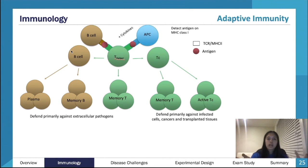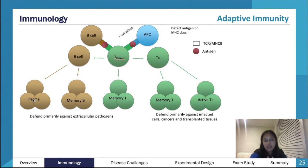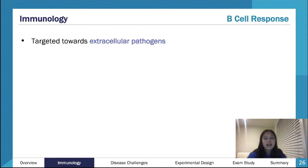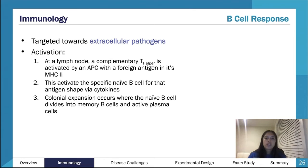This will also activate your B cells, and the same thing happens - clonal expansion, you get heaps and heaps of these cells. B cells go into your plasma cells and memory B cells. The role of plasma cells is just to make antibodies, and those antibodies have specific receptors to that specific antigen. Plasma cells are really good for bacteria and targeting extracellular pathogens. Cytotoxic T cells are really good for intracellular pathogens and cancers.